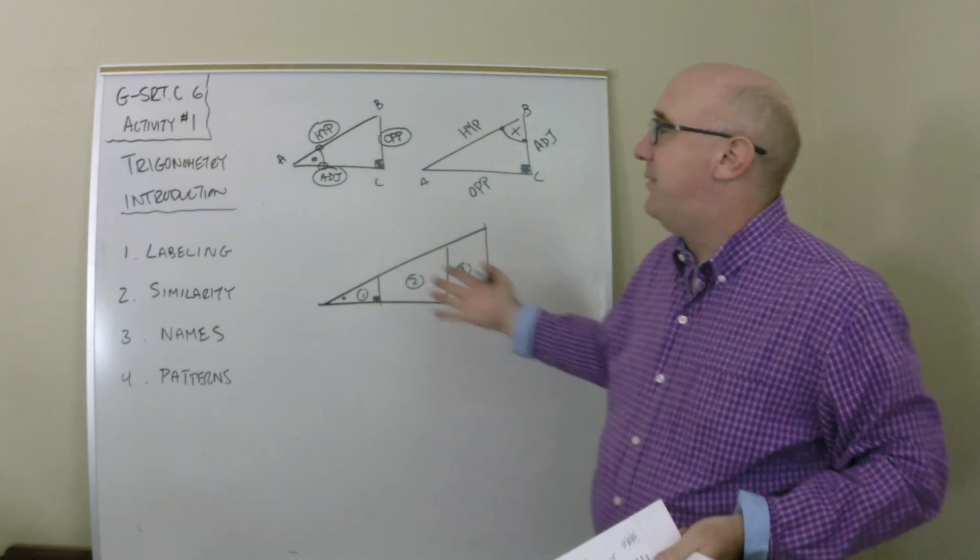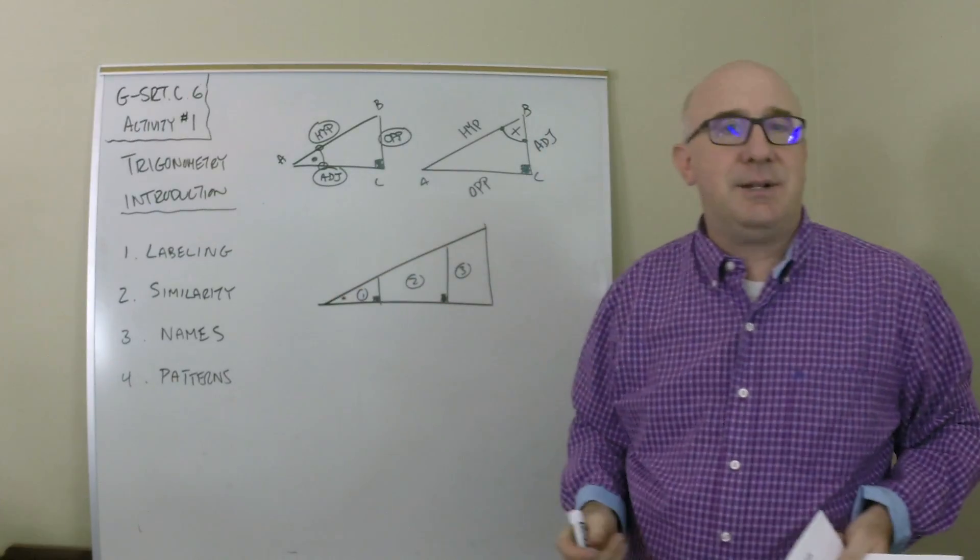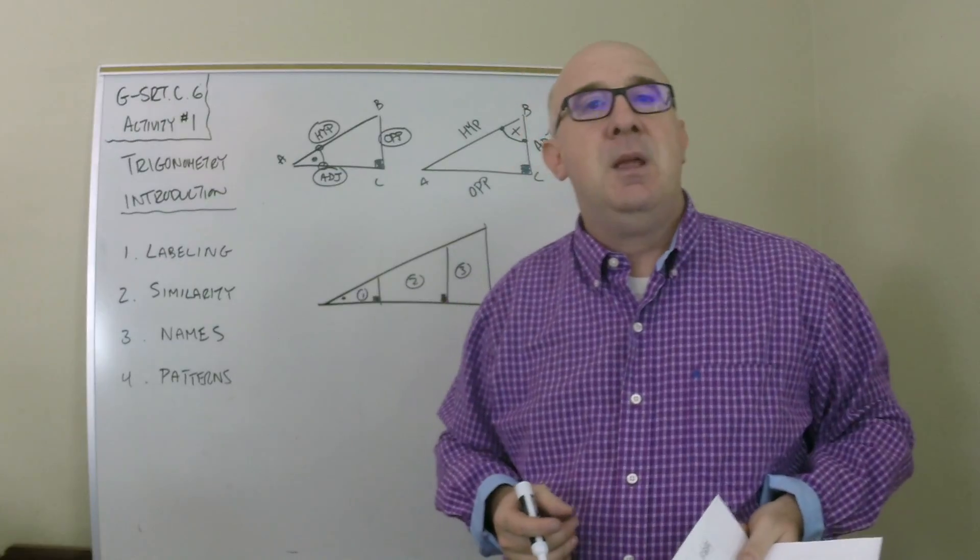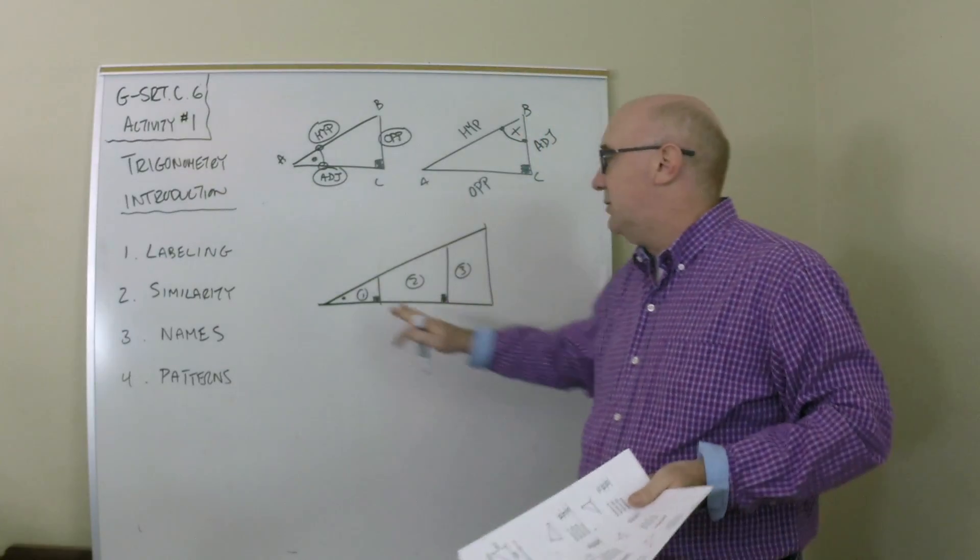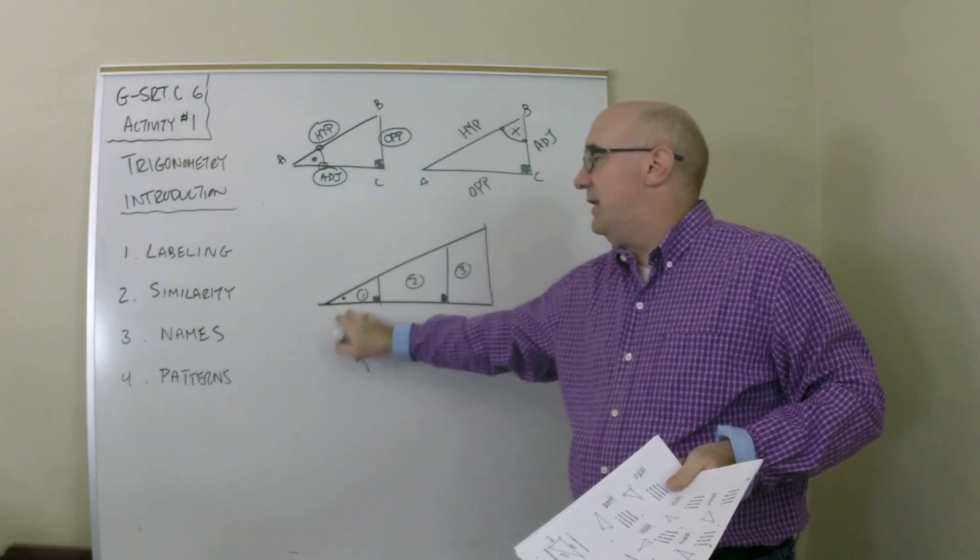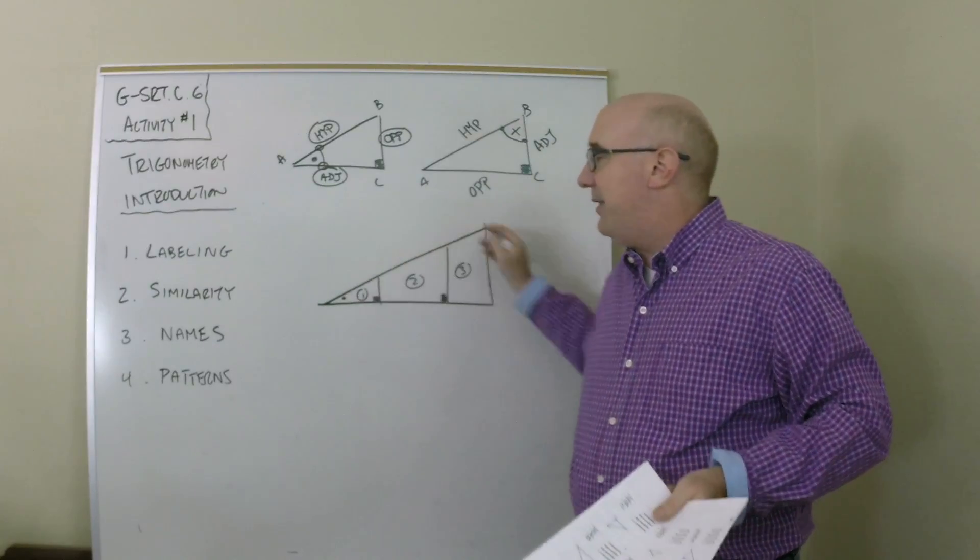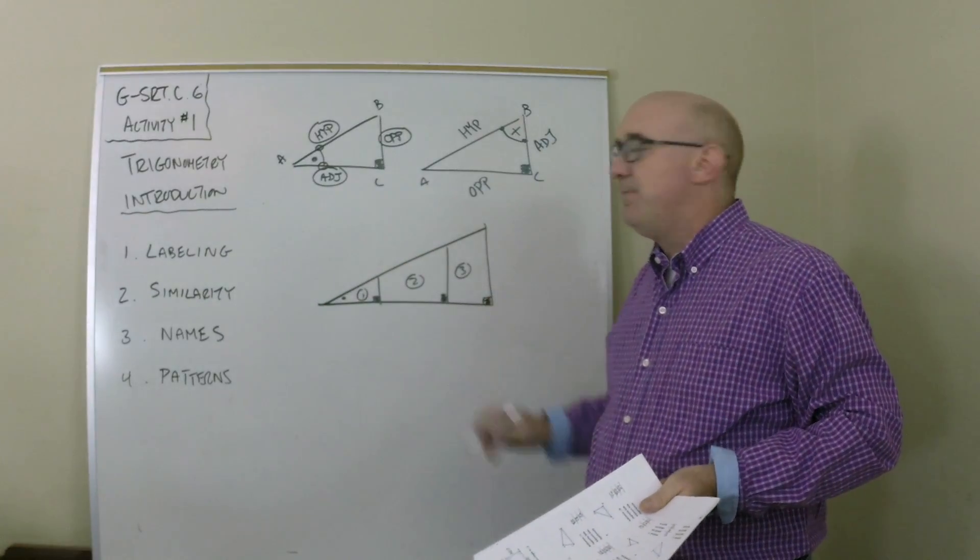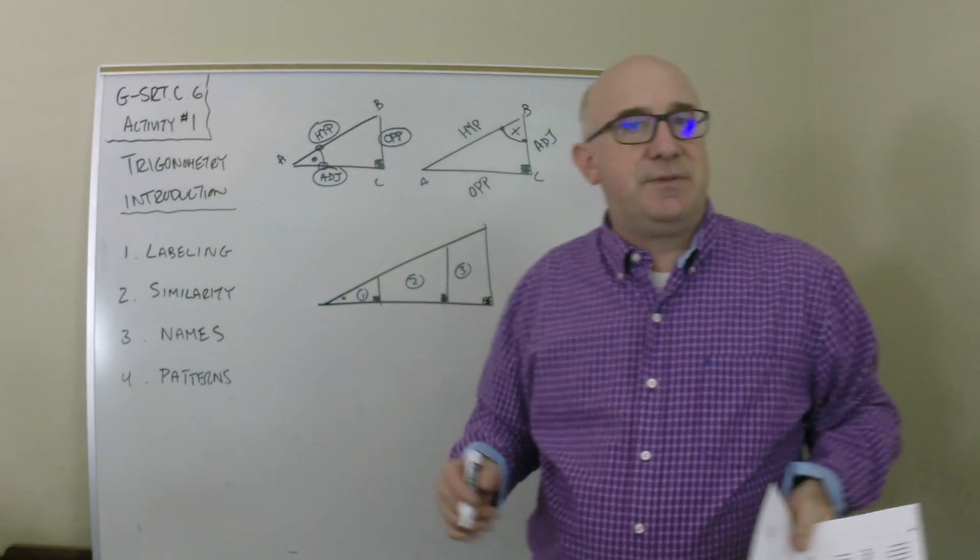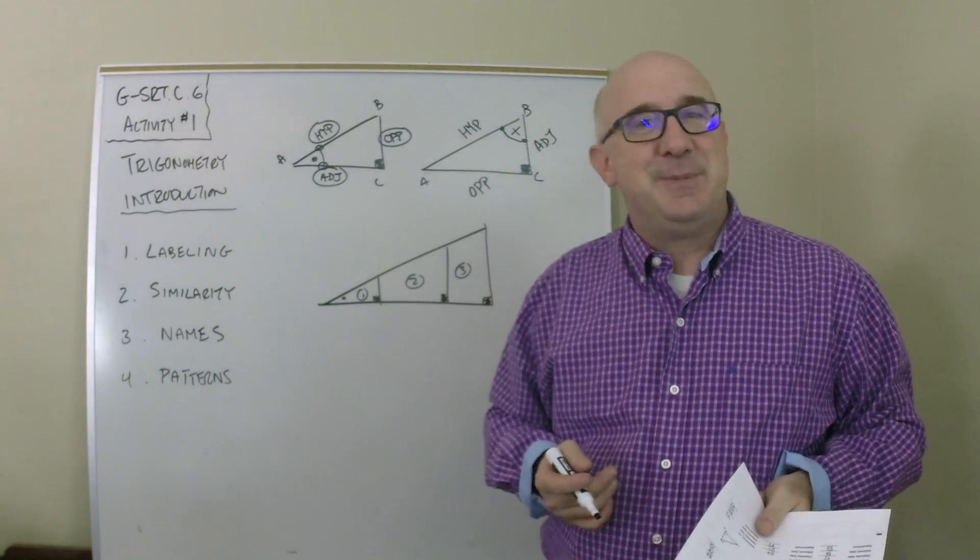The second part after you've done labeling will be some ratio finding. The goal of this is that we'll split you up and you'll look at the ratios of the little, the medium, and the large triangles. And you'll look at ratios of sides. Now, you know what to expect.